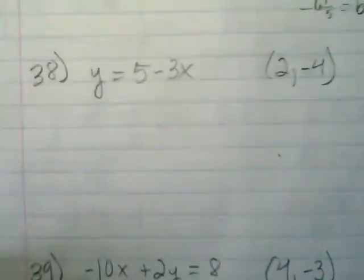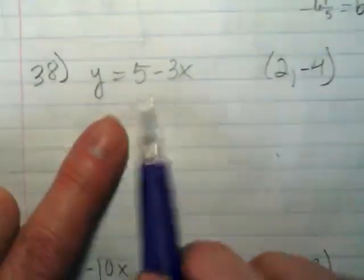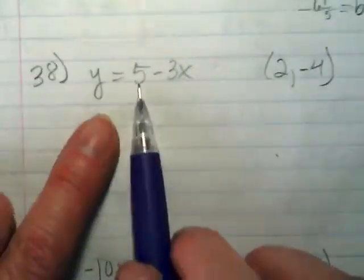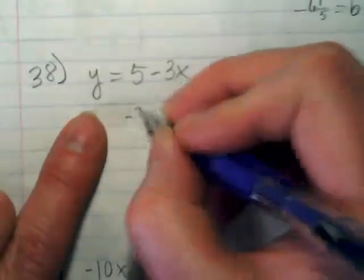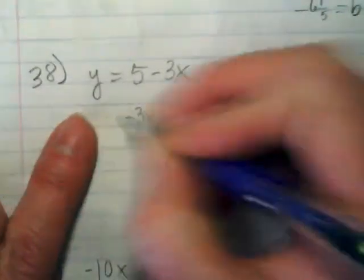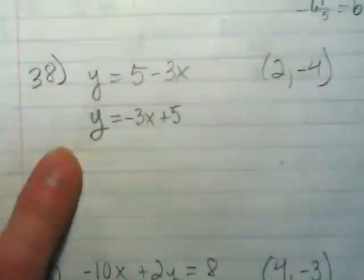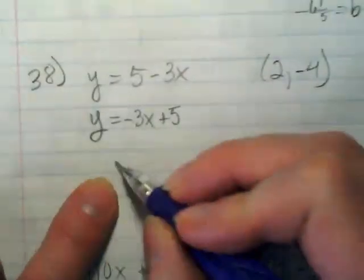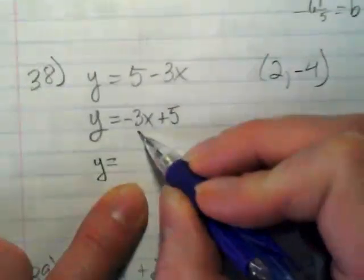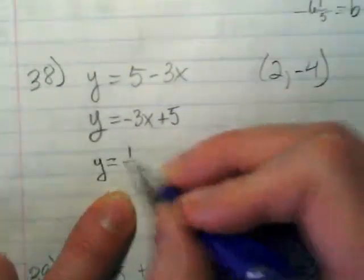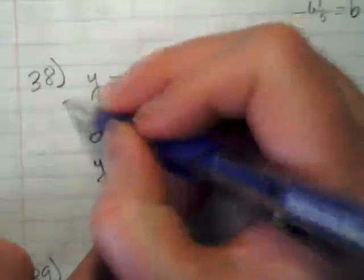This one's going to take a little bit less work. It's almost in y equals mx plus b, we just need to commute these two terms. So, I'm going to rewrite this as negative 3x plus 5 equals y. And the perpendicular slope to this is going to end up being y is equal to positive 1 third x. And we don't know the plus b.